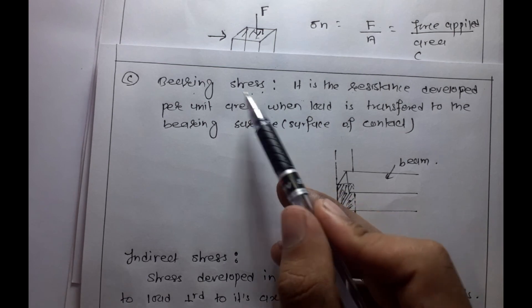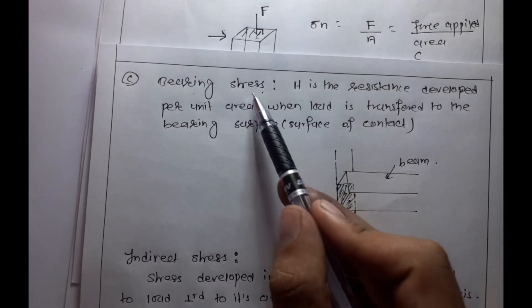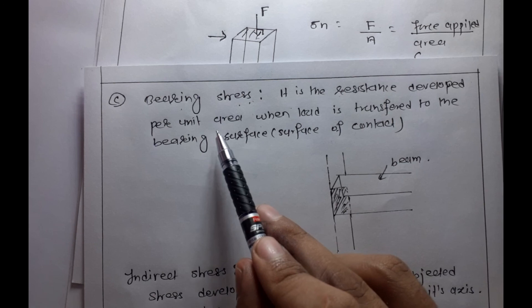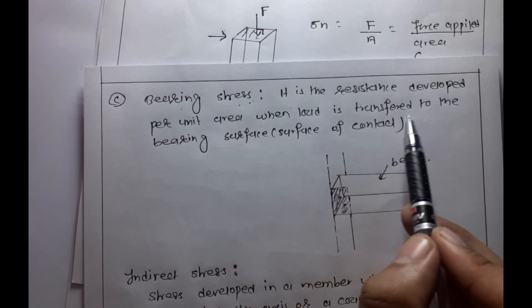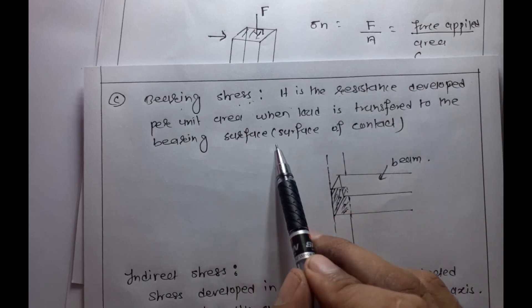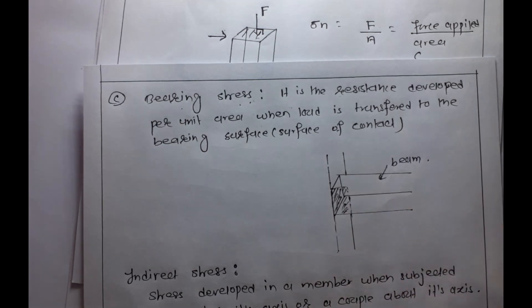The third type of stress is bearing stress. It is the resistance developed per unit area when a load is transferred to the bearing surface or surface of contact.